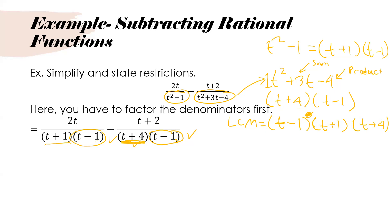A little hint: you may see a question asking if something is the lowest common multiple. Remember that t minus 1 comes up twice between the denominators, but in the lowest common multiple you write it only once — not t minus 1 squared. The lowest common multiple must be the smallest value that all denominators can multiply into. So the lowest common multiple here is (t plus 1)(t minus 1)(t plus 4).